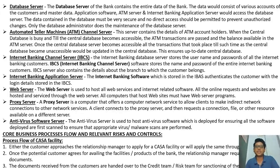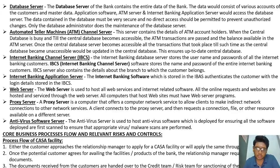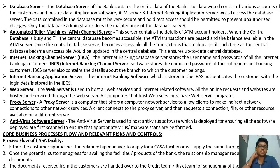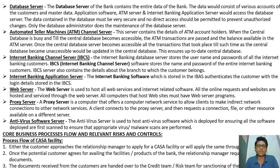The Internet Banking Channel Server (IBCS) stores the usernames and passwords of internet banking customers and contains details about the branch to which each customer belongs. The Internet Banking Application Server (IBAS) authenticates customers using login details stored in the IBCS. The web server hosts all web services and internet-related software — all online requests and websites are serviced through web servers.